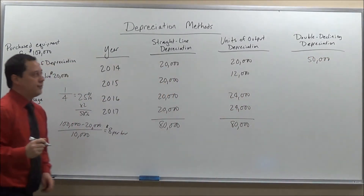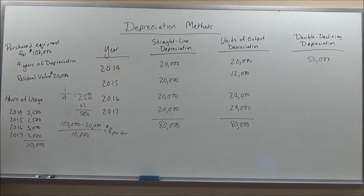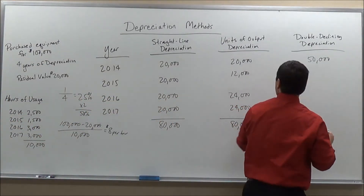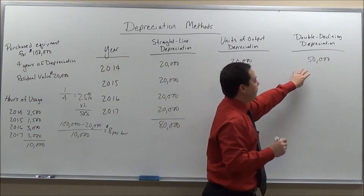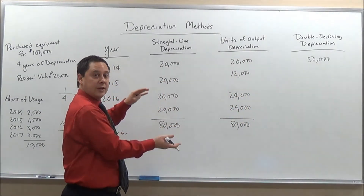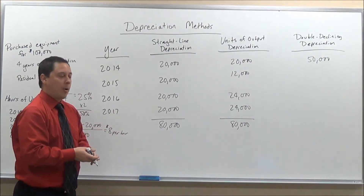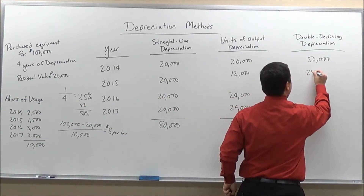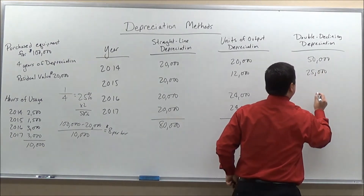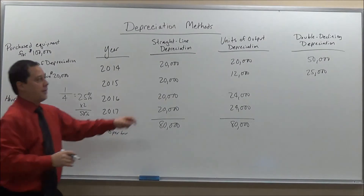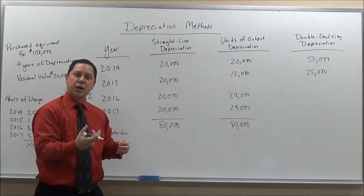We take 50% multiplied by $100,000, which gives us $50,000 depreciation in the first year. In year 2, we have $50,000 remaining book value. We multiply that by 50% again, giving us $25,000 depreciation in year 2. So after two years, we have $75,000 in total depreciation.